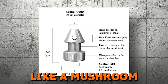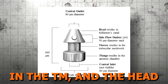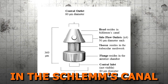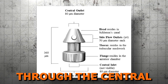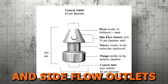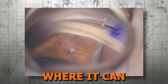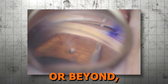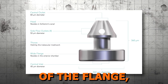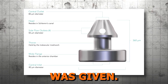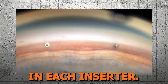It is designed like a mushroom with a flange that stays in the anterior chamber, a thorax that is lodged in the TM, and the head that resides in Schlemm's canal. The central inlet allows aqueous humor access through the central and side flow outlets that lead to Schlemm's canal. Due to the potential for over-implantation of the device, where it can get buried within the TM or beyond, a modification was made to increase the diameter of the flange, and a new name was given: iStent Inject W, for the wider flange.